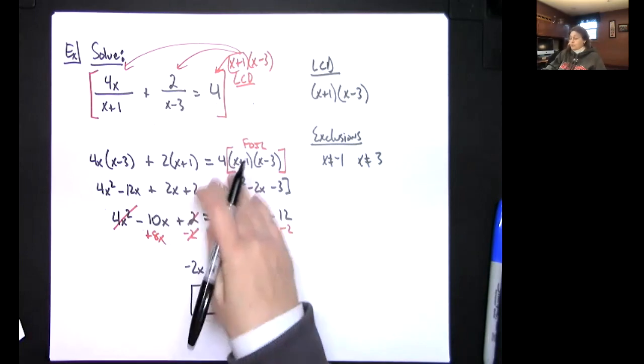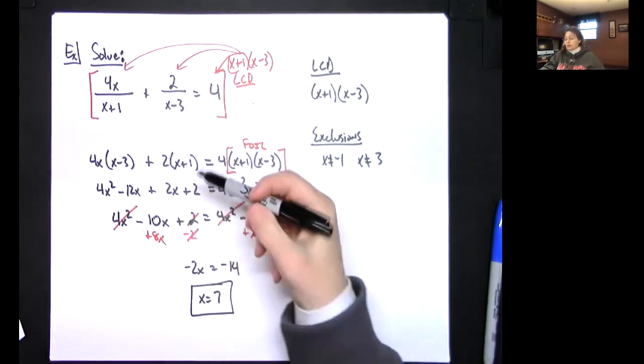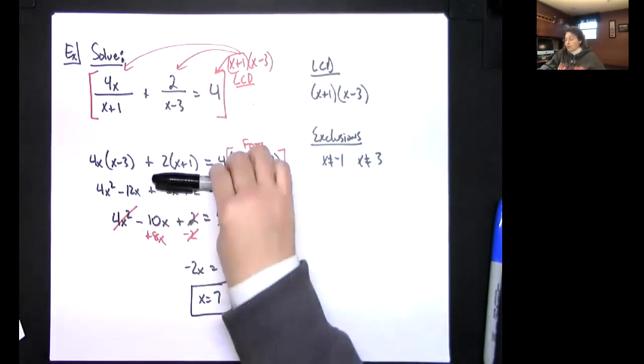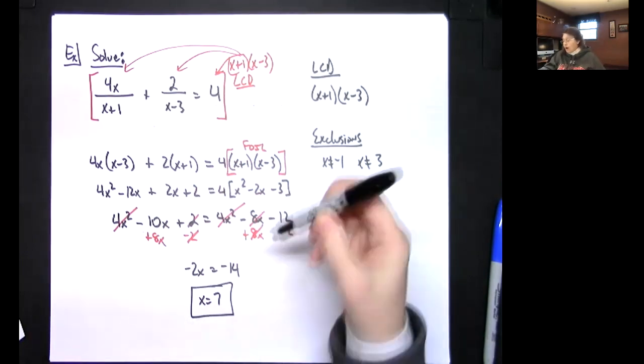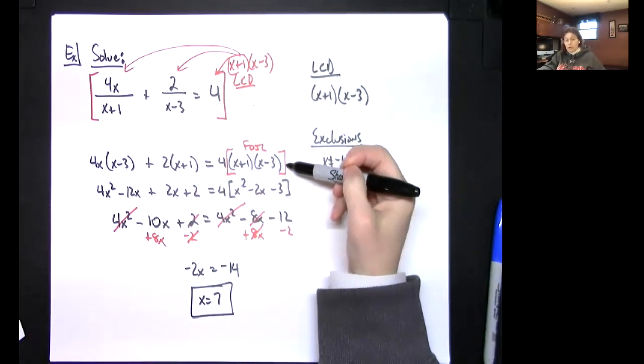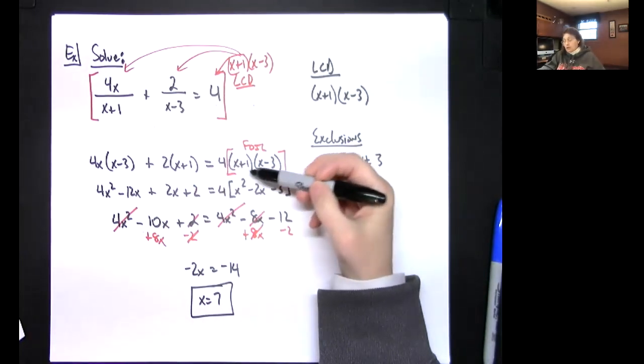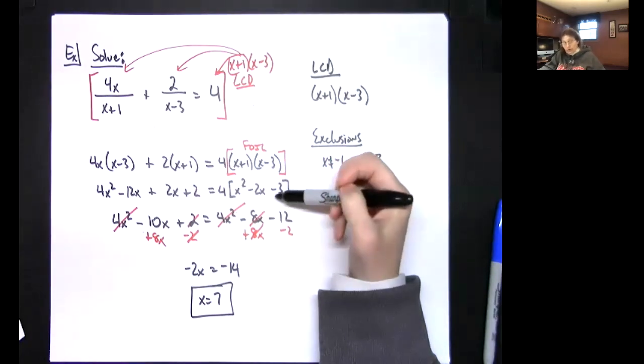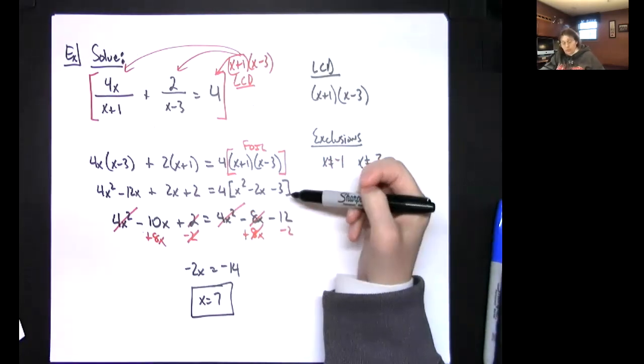So x equals 7, and that's the answer. The algebra here shouldn't be too bad for the most part. The key on this side is to FOIL first, then distribute the 4, and you should be good.